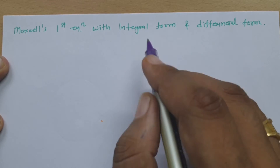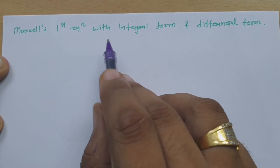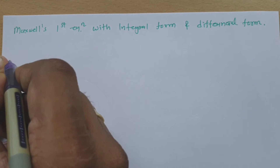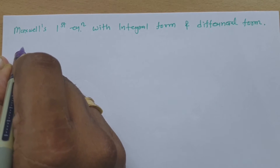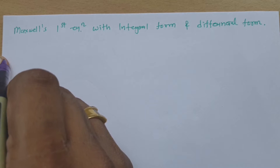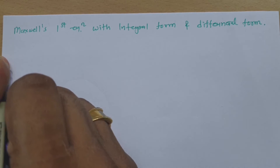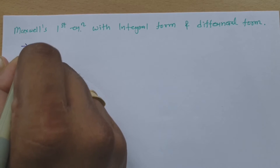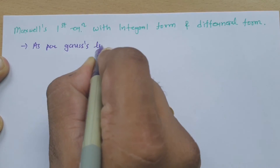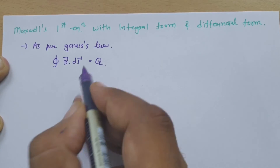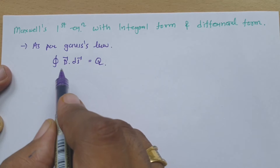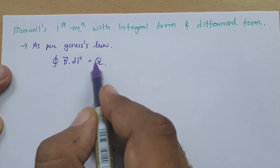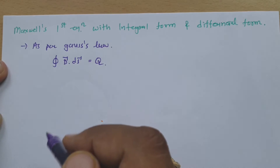I will be using Gauss's law to derive Maxwell's first equation in integral form and differential form. As per Gauss's law, electric flux passing through any enclosed surface is equals to the charge enclosed. Total electric flux passing through any enclosed surface is equals to charge enclosed by that surface.